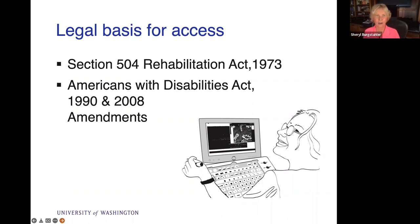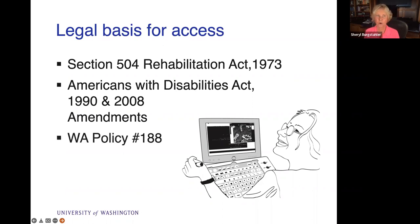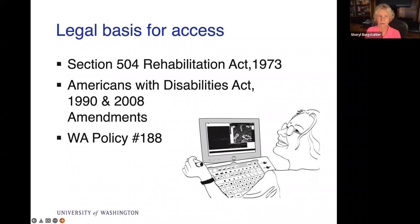These two laws are civil rights legislation. They don't specify technical standards for making your website accessible. What they say is: if you have a website, or a course, or whatever you're offering, you must make it accessible to individuals with disabilities. And in our state, we also have Washington State Policy Number 188, which reiterates Section 504 and the ADA and provides detail about how we need to implement those laws within Washington State — for example, requiring a coordinator of IT accessibility at each institution.